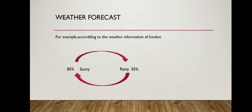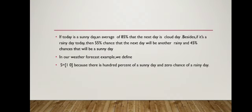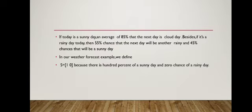For example, according to weather information from London, on a given day there is an 85% chance it is sunny and 55% chance it is rainy. If today is a sunny day, there is an average 85% chance that the next day is cloudy. Besides, if it is a rainy day today, then there is a 55% chance the next day will be rainy and a 45% chance that it will be a sunny day.